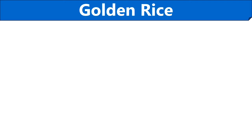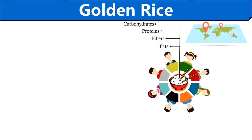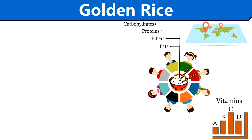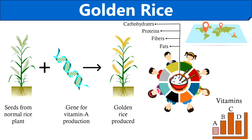Other than Bt cotton, golden rice is also a prevalent example of a genetically modified crop. The concept of golden rice was introduced when a large amount of the global population started experiencing deficiency of vitamin A. Studies discovered that a huge proportion of the population takes rice as their main meal, which provides carbohydrates, proteins, some fibres and fats. From this, agricultural scientists got the idea of incorporating a gene into the rice plant so that it could also produce vitamin A. So when people intake rice as their main meal, their problem of vitamin A deficiency also gets solved. This genetically manipulated rice, which was capable of producing vitamin A, was named golden rice.